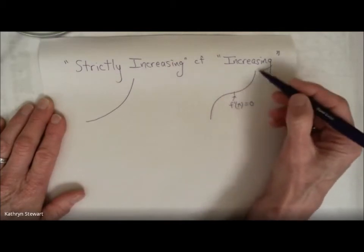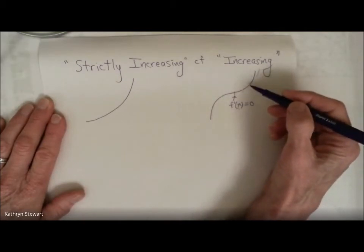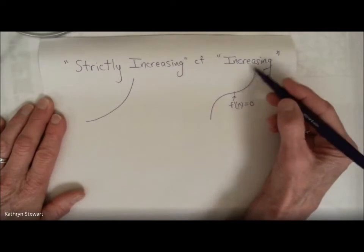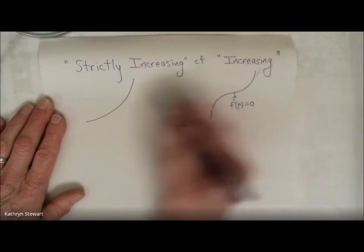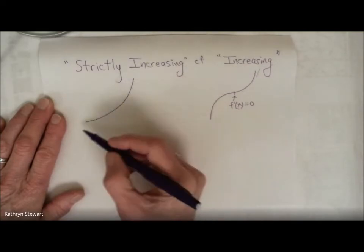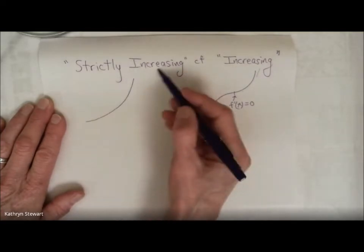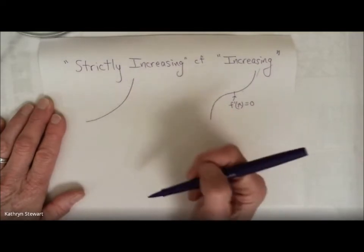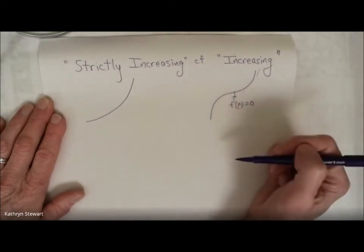So a cubic, for example, would not be strictly increasing over its whole domain, but we would say the cubic is increasing. Whereas, for example, an exponential function would be strictly increasing because its slope is always positive and there's never a moment when it's zero.